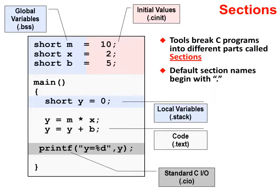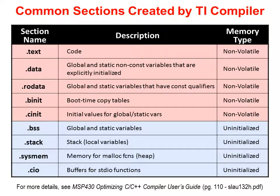Most of the others are better named: .cinit for C initialization tables, .stack for the stack, and .cio for standard IO buffers. The only other one shown is the section name for code — .text — which is another odd one; while .code might have been more intuitive, .text has been around a long time. Here's a table showing most of the section types created by the TI compiler — we just got done talking about five of the rows on this table.